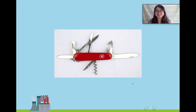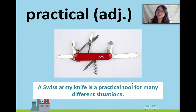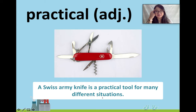We see our words and how they're spelled. Now let's look at an image of them. First, we have this really cool tool — maybe you have one or you've seen one before. This is called a Swiss Army knife. This is a practical tool. A Swiss Army knife is a practical tool for many different situations. Think of our context: tool, many different situations.